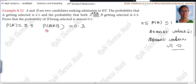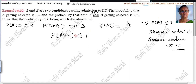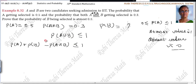So first, we use the fact that P(A∪B) is less than or equal to 1. By the addition theorem of probability, P(A) + P(B) − P(A∩B) is less than or equal to 1. You are replacing P(A∪B) using the addition theorem.